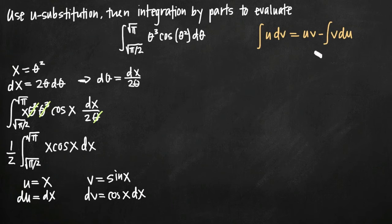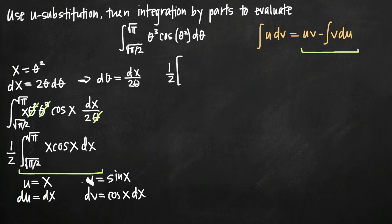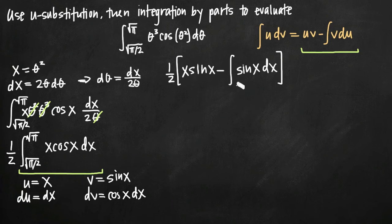Using the integration by parts formula, we replace the integral with the right-hand side. We still include the one-half out in front. Then we get one-half times u times v minus the integral of v du. Plugging in: u is x, v is sine of x, so u times v is x sine of x. Then we subtract the integral of v du, which is sine of x dx. Since we're dealing with a definite integral, these limits of integration apply to everything inside the brackets.